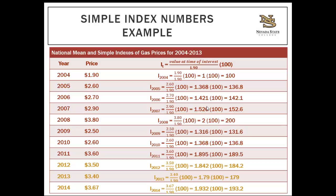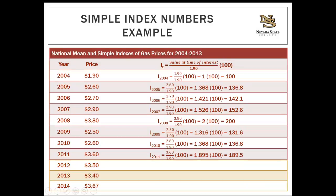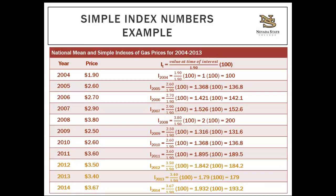For 2012, the mean cost of gas was $3.50: 3.5 ÷ 1.90 = 1.842 × 100 = 184.2. Looking at the results: the price of gas in 2005 was 136.8% of the price in 2004. In 2008, gas was 200% of the 2004 price — essentially double.